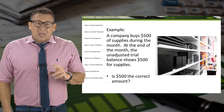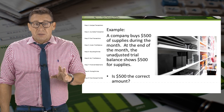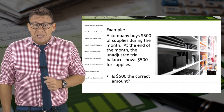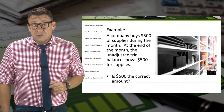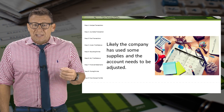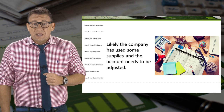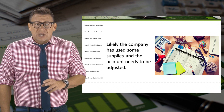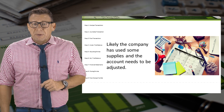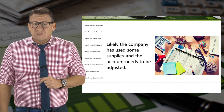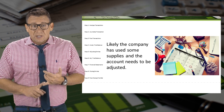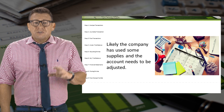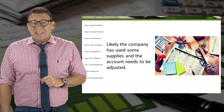Let's look at an example. A company buys $500 of supplies during the month. At the end of the month, the unadjusted trial balance shows $500 for supplies. Is $500 the correct amount? Isn't it likely that the company has used some of the supplies? Yet no one wants to make a journal entry each time someone takes a pen or staples some papers — that would be horribly inefficient. Yet pens were used and papers were stapled, and those things need to be accounted for. This is why accountants record adjusting journal entries at the end of the period.